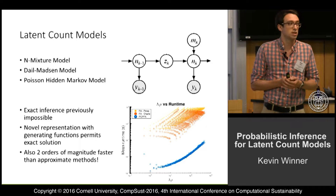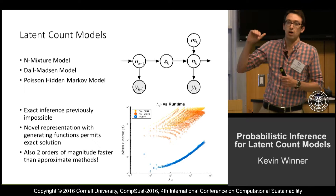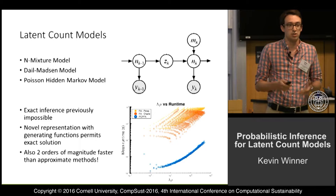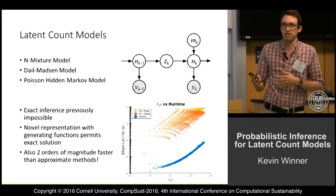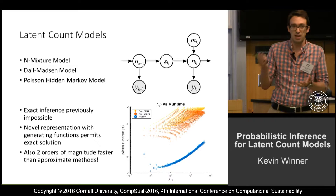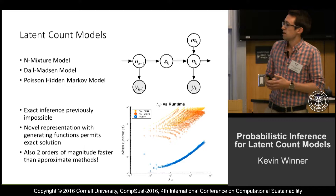There are a couple of approximate solutions which, to simplify, basically put an upper bound on the possible values for these latent variables, giving a finite domain we know how to do inference for. But choosing this upper bound gives an unsatisfactory trade-off between accuracy guarantees and runtime.